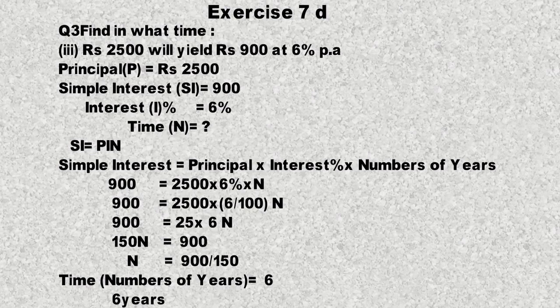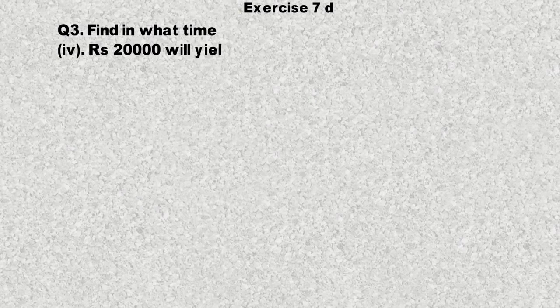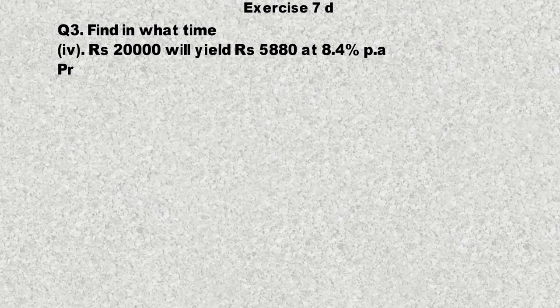Exercise 7D, Question number 3, Part number 4: Find in what time rupees 20,000 will yield rupees 5,880 at 8.4% per annum. 8.4% per annum کے حساب سے 20,000 روپیہ کتنی دیر تک invest کرنا پڑے گا کہ 5,880 روپیہ generate ہوں؟